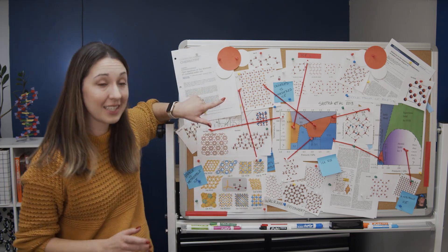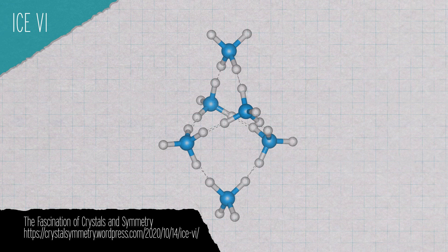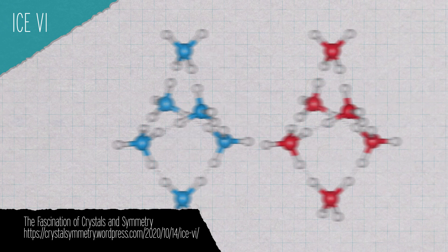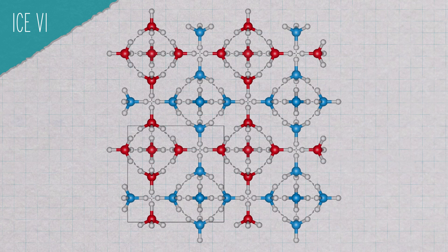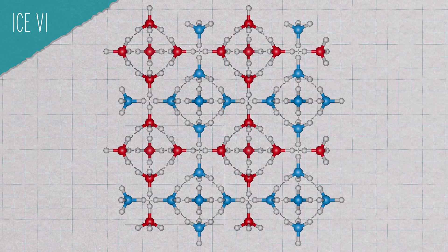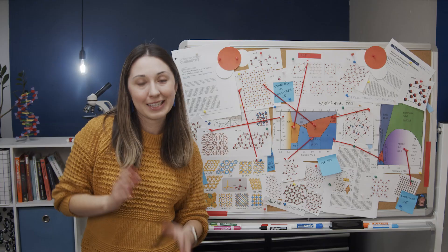If we zoom in on the structure of ice 6, I think this one is really, really cool. It's actually composed of two sublattices that fit inside one another, but aren't connected. There are no hydrogen bonds between the two, so they just kind of nestle together. They're not connected. They're just hanging out.